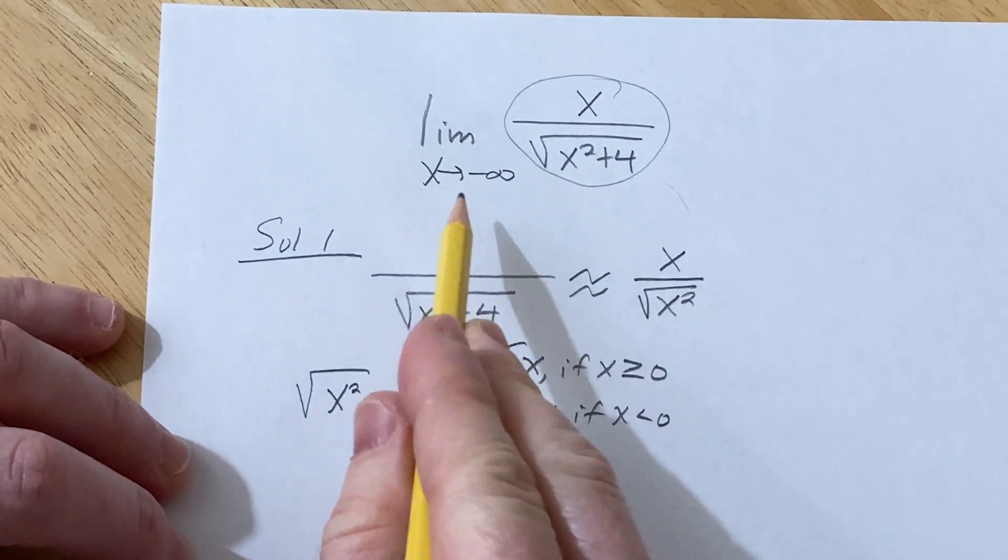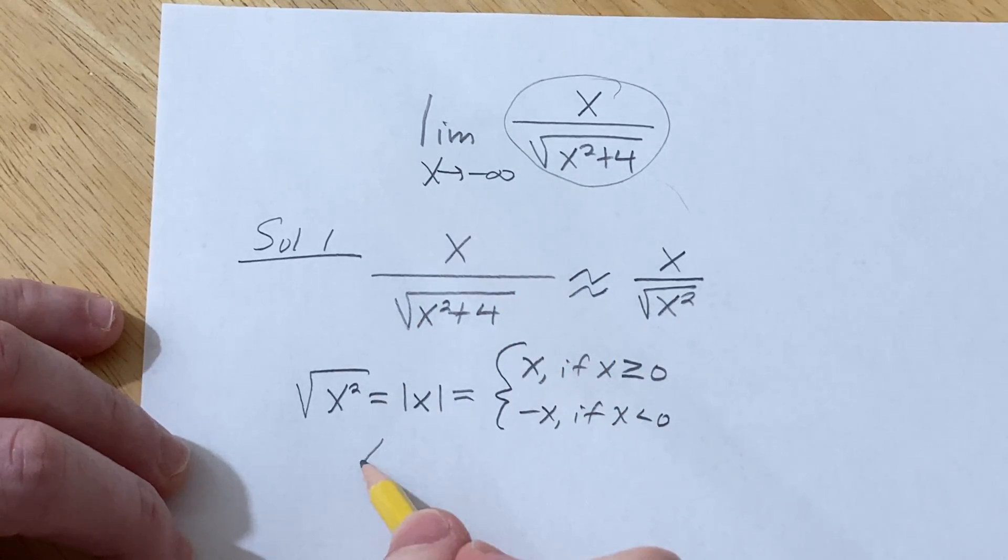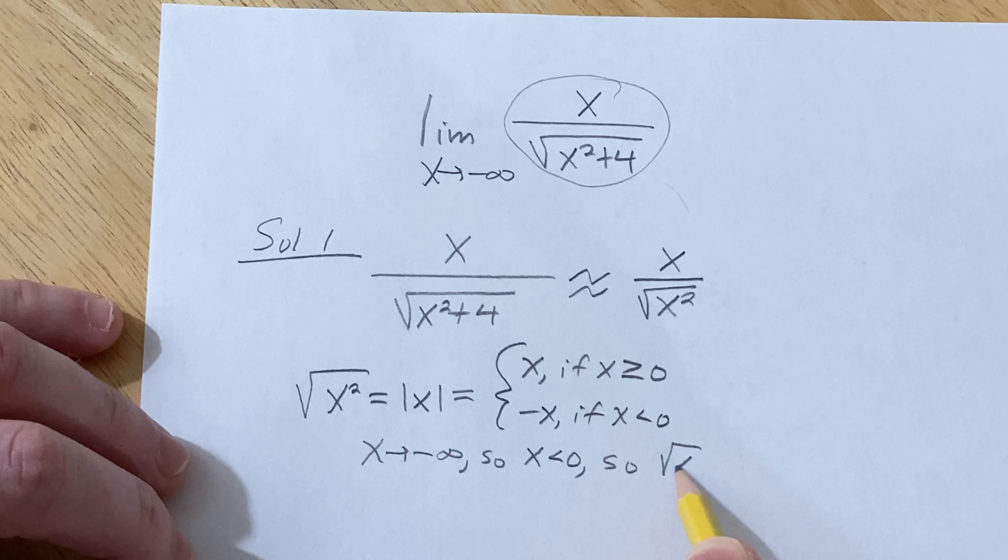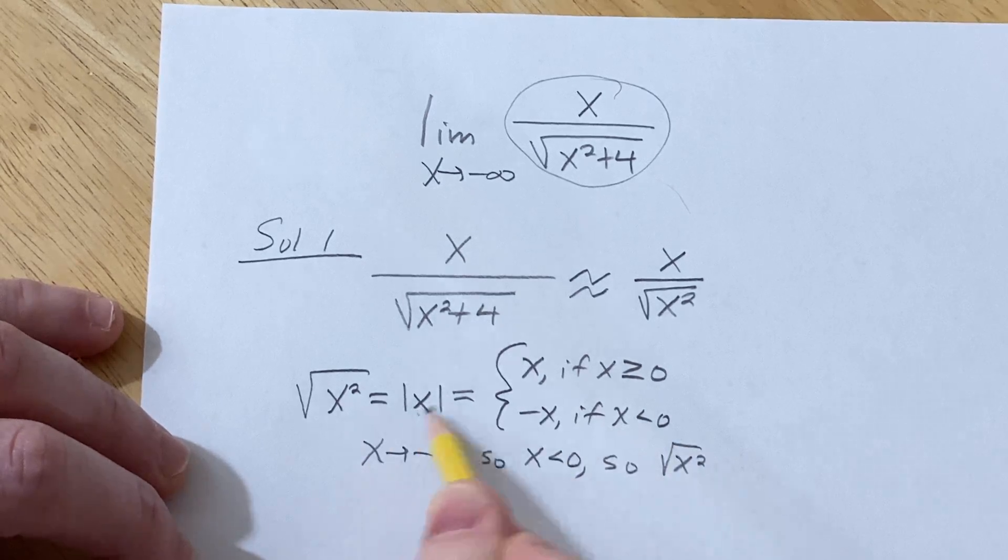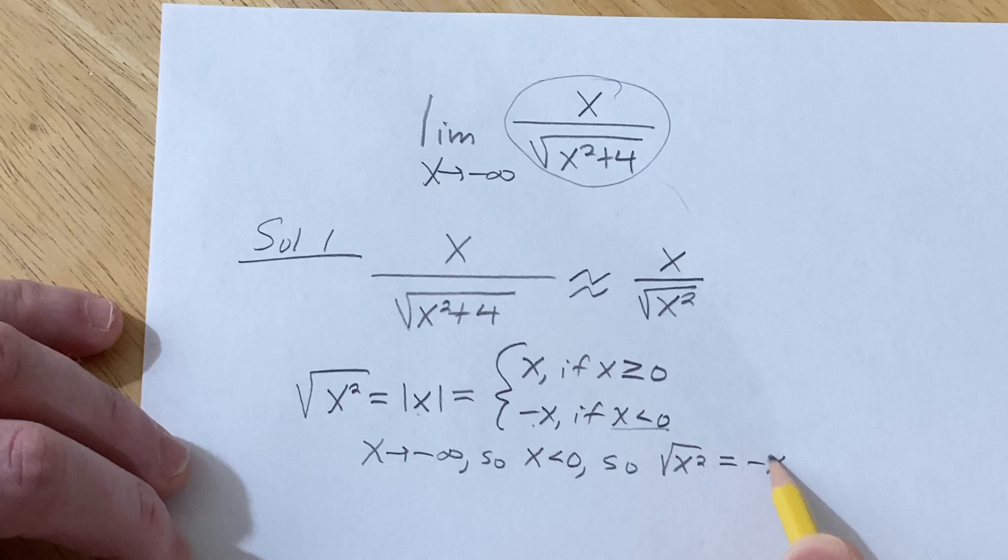So in this particular problem, since x is approaching negative infinity, that means that x is less than 0. So that means that the square root of x squared, which is the absolute value of x, we use this condition here, it's equal to negative x.